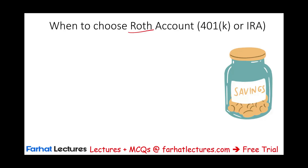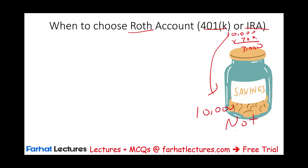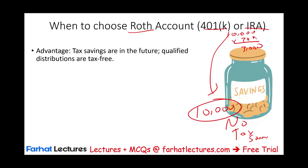When to choose a Roth 401k or Roth IRA: with the Roth, you put the $10,000 away but get no immediate tax savings. Why would you do that? Because as long as you meet certain requirements, when you take this money out — the $10,000 plus any earnings — it's tax-free. The earnings could be substantial. For example, if you invested $10,000 in Amazon 20 to 25 years ago, it could now be worth close to a million dollars.